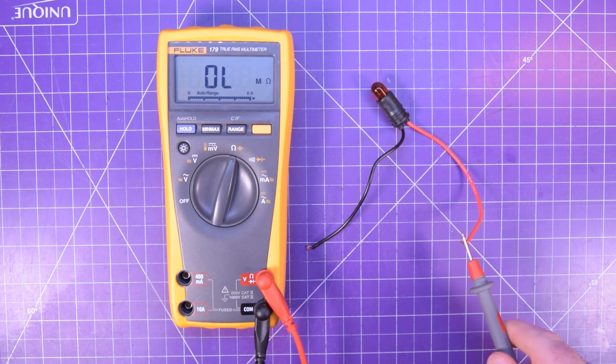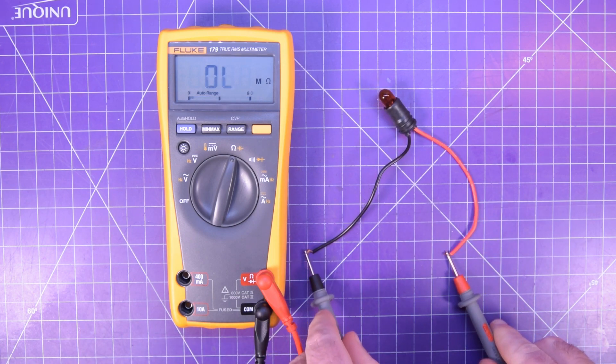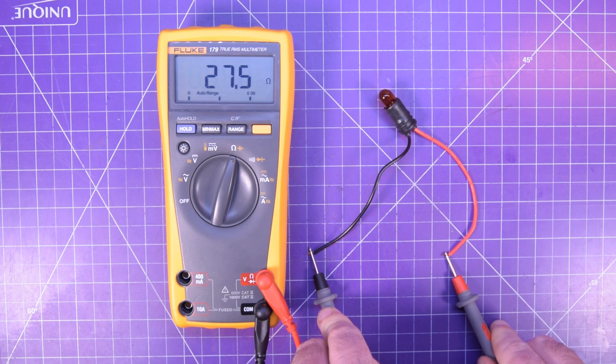Now let's measure this automotive bulb. Again, any lead to any side, and it looks like it's roughly 27.5 ohms. In a future video, I'll show you what to do with this reading.